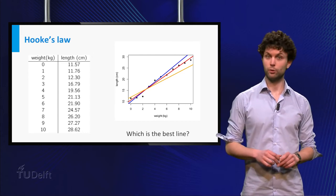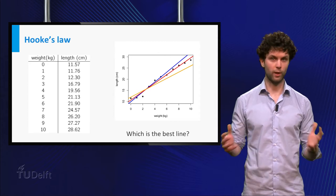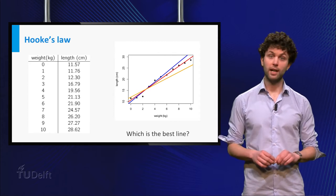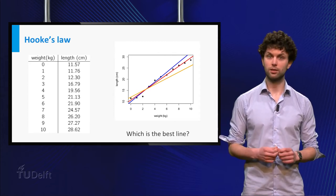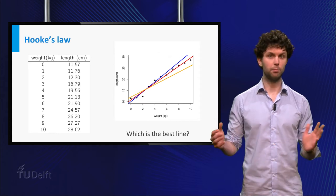Well, the criterion we use is the so-called least squares method, which minimizes the squares of the distances between the straight line and the points.